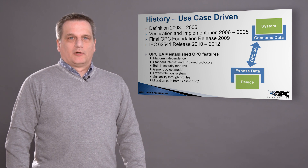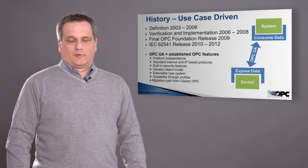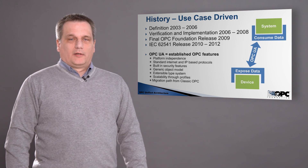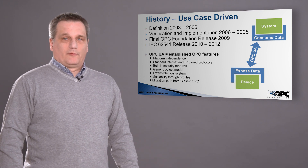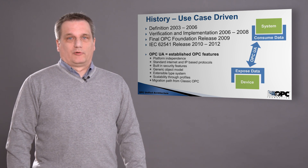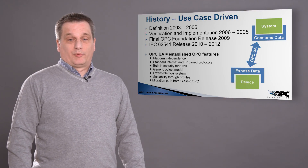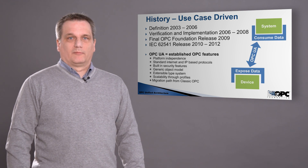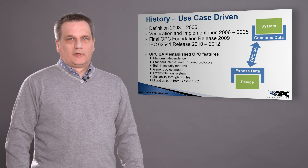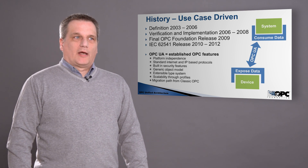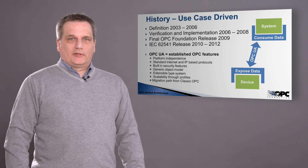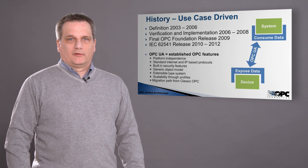OPC UA is the classic OPC feature set plus additional platform independence — you can now implement OPC on any kind of operating system or platform. In addition, we now use standard IP protocols for transporting the information, and we have built-in security features built into the core of OPC, not only for the transport but also for the individual data points in an OPC server, giving us access rights down to a data point level. We also have an extensible type system, which we will talk about in this presentation.